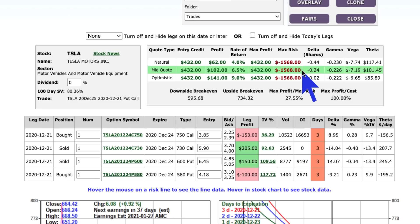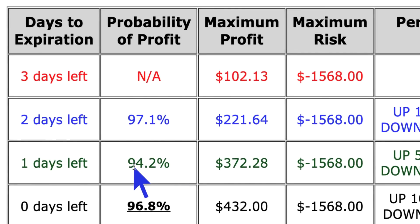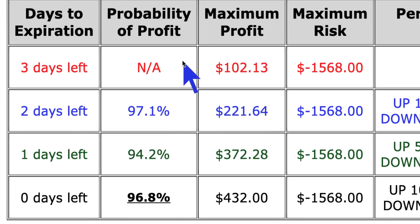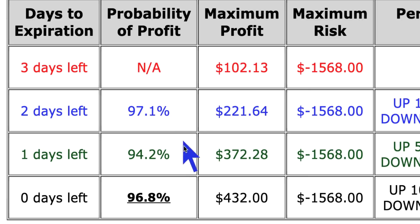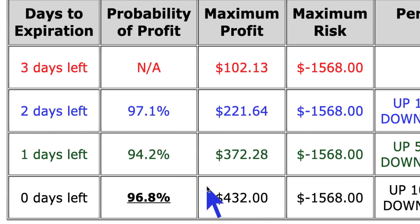Now, why in the world would someone risk over three times what they're bringing in? It's a word that begins with a P — probability. The statistical probability on this trade right now shows somewhere between 94 and 97% when we look at three days left to expiration, two, one, and zero days to expiration. Statistically, this stock in this particular trade has a 94.2% chance with one day left, a 97% chance with two days left that it is going to be at break even or better. And at expiration, you're looking at a 96.8% chance we're at break even or better. That's why people are willing to risk more than they bring in — because the statistical probabilities are on their side.